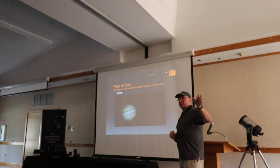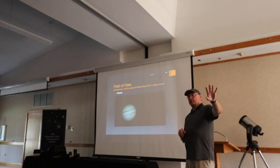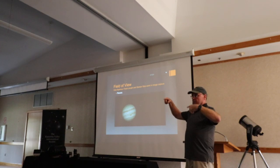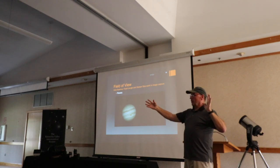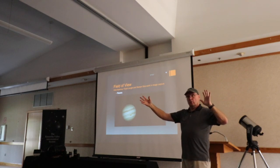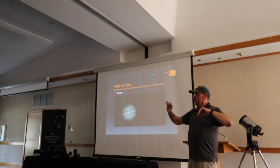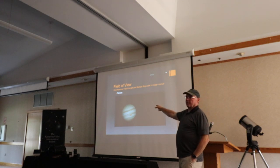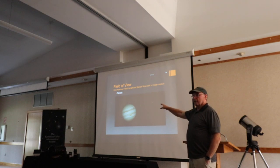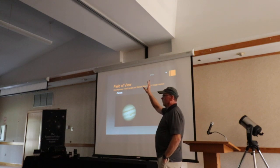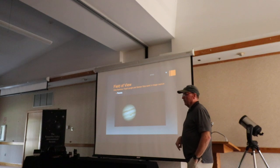The best place to do planetary imaging is closer to the equator, because you don't have to deal with the jet streams — the jet streams are in the southern or northern hemispheres. Around large bodies of water like the ocean, you have a nice stable column of air. Some of the great images produced by top imagers come from equatorial regions because they have nice stable columns of air.